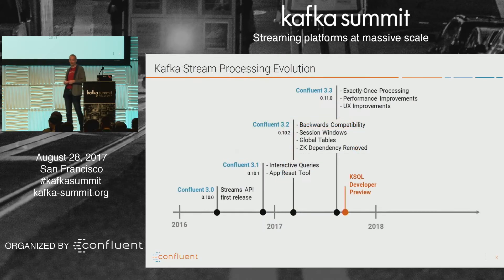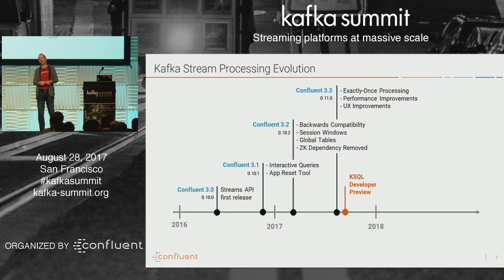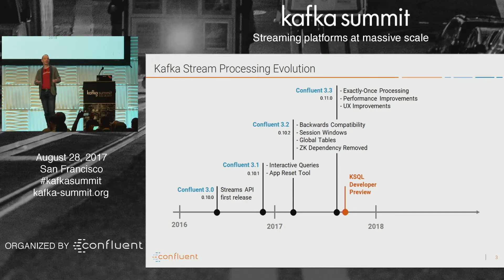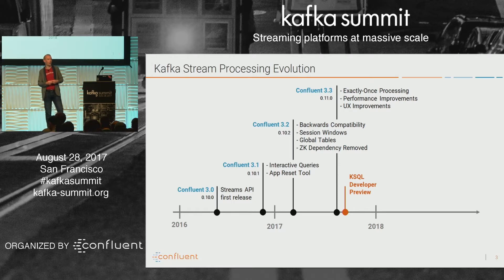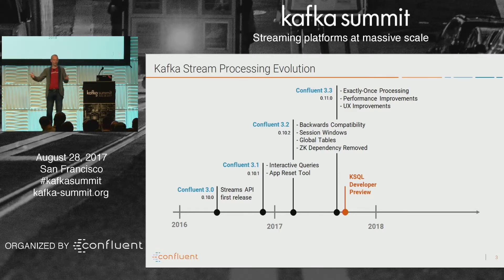We've been working for a while in the Apache community and at Confluent on this stream processing idea. Maybe a little over a year ago, we had the first release of the Kafka Streams API — a Java DSL that allows you to manipulate streams in code and write functions that operate on the stream of records flowing by you as a whole thing. It has gradually evolved to have many more capabilities.